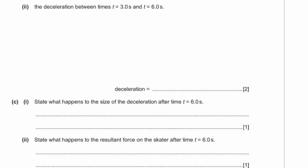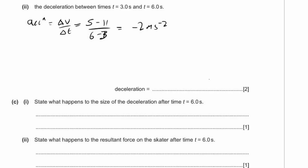Part two asks for the deceleration between t equals three seconds and t equals six seconds. Acceleration equals change in speed over change in time — final speed minus initial speed, over final time minus initial time. This gives a value of negative two meters per second squared. But since the question asks for deceleration, not acceleration, we report it as two meters per second squared — that's the rate at which it's slowing down.